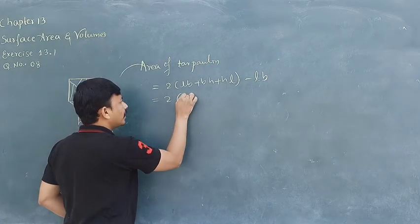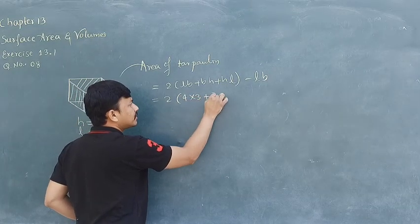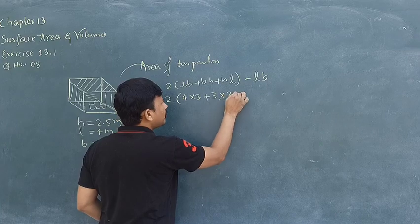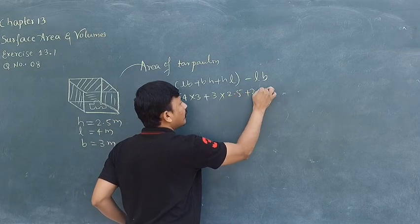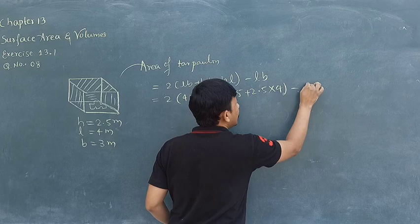4. What is breadth? 3 plus 3 into what is height? 2.5 plus 2.5. What is length? 4 minus L, what is length? 4 into 3.